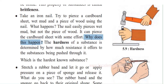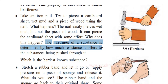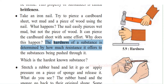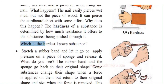Now why does this happen? This is called hardness — how hard or how soft a substance is. The hardness of a substance is determined by how much resistance it offers to something being pushed through it. That will determine how hard the substance is. Which is the hardest known substance? Do you know it?